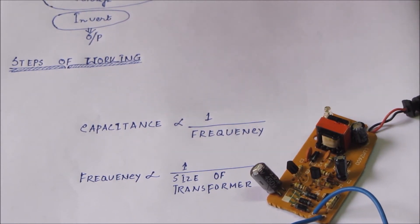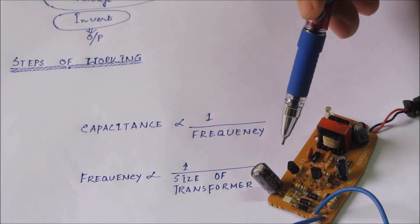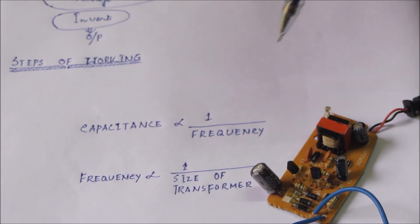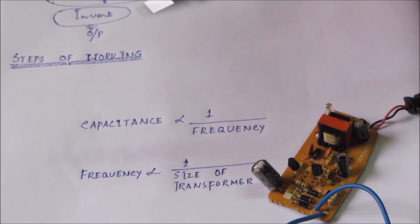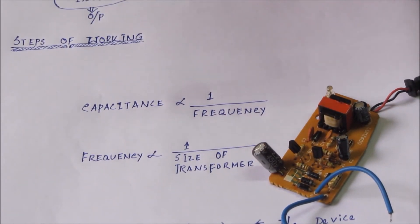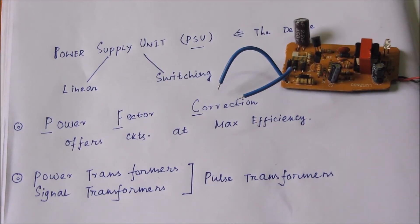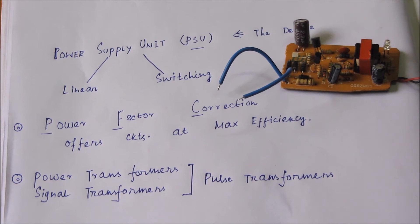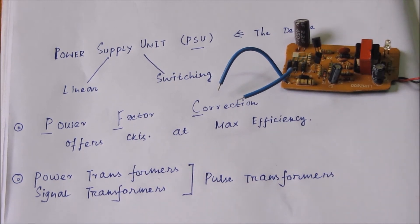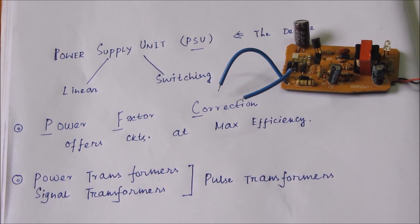So if we need to use a miniature transformer — also called a power pulse transformer — we have to increase the frequency to a certain value. This is done by passing the signal through two transistors. In some circuits MOSFETs or other power electronic components are used, but the basic principle of a mobile charger circuit relates to the power supply unit or PSU concept.